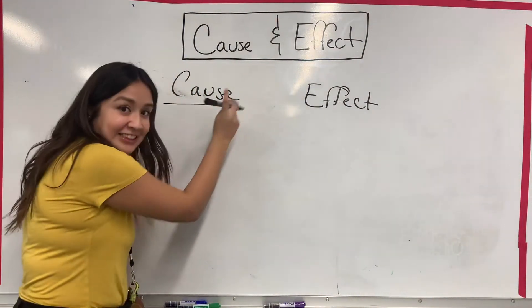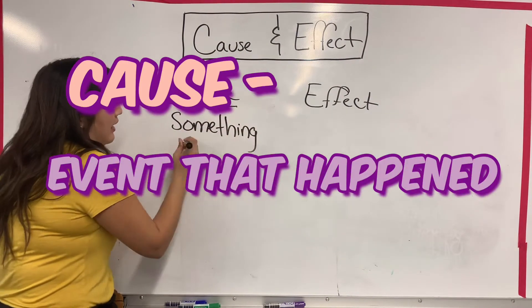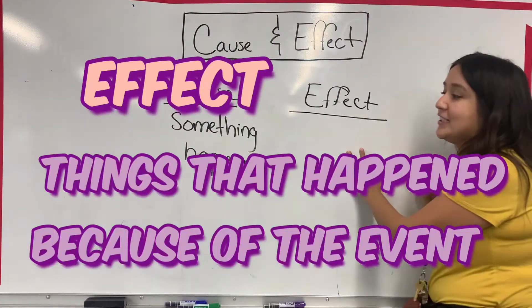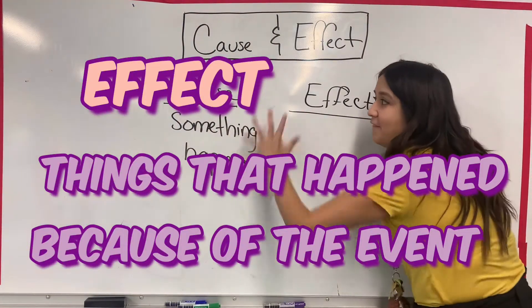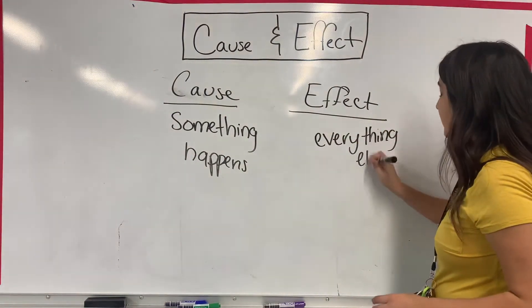Cause is something that happens. Cause - something happens. And effect is everything that happens because of this event. Everything else happens, everything else. Okay, let me give you an example.